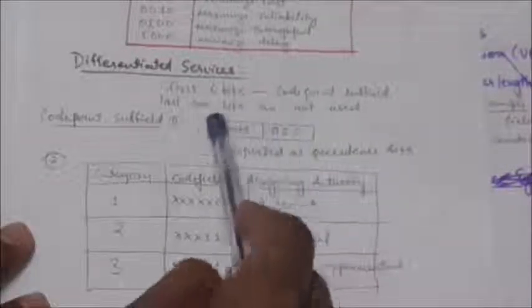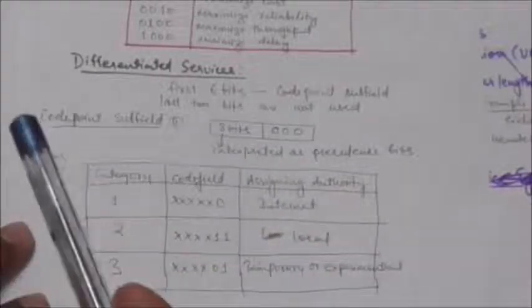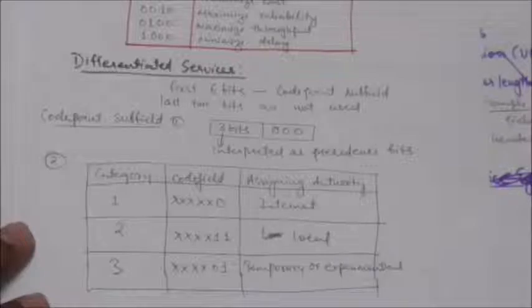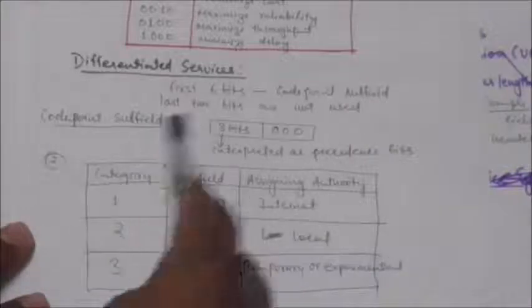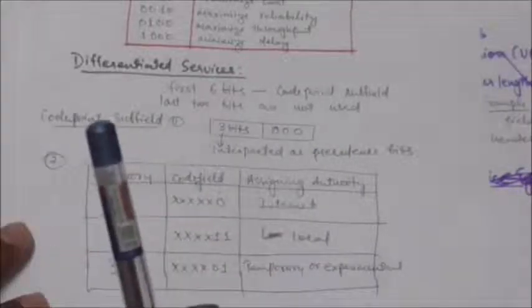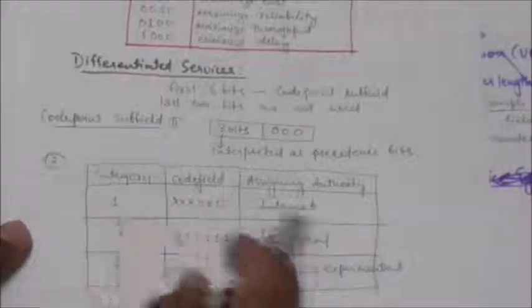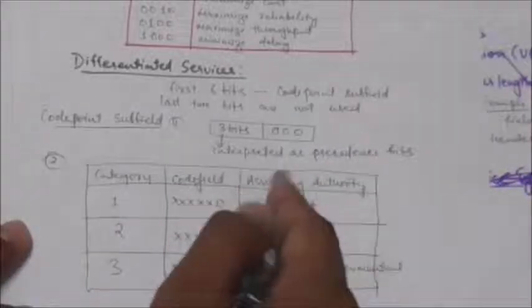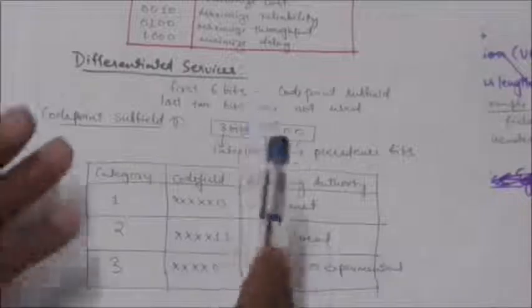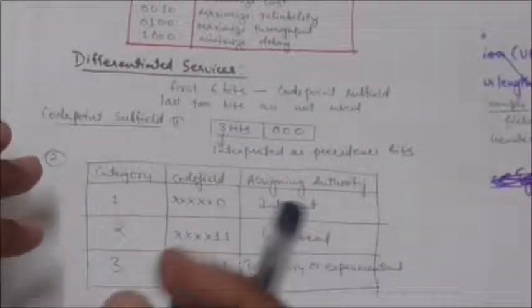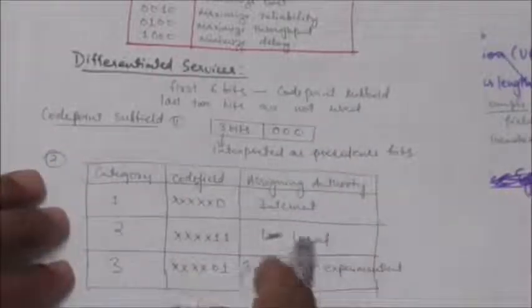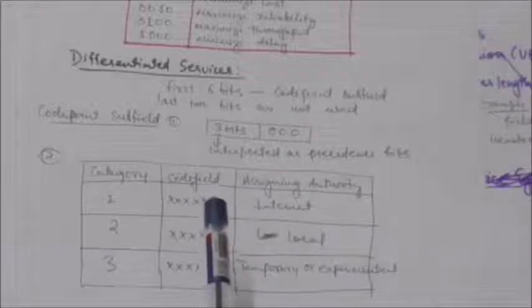The first way: when the three rightmost bits are zeros, the three leftmost bits are interpreted the same as the precedence bits in the Service Type interpretation. The second way: when the three rightmost bits are not all zeros, these 6 bits define 64 services based on priority assignment by internet or local authorities, as shown in the table.